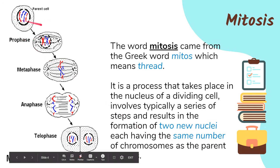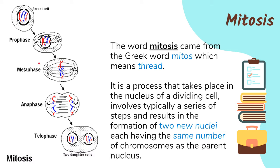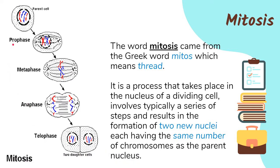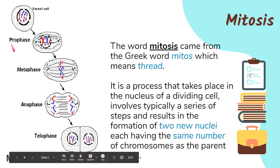These are the different stages or steps of mitosis: prophase, metaphase, anaphase, and telophase. To help you remember, just use the acronym PMAT — P, M, A, T: prophase, metaphase, anaphase, and telophase. Now we will look into the different stages as we go along.